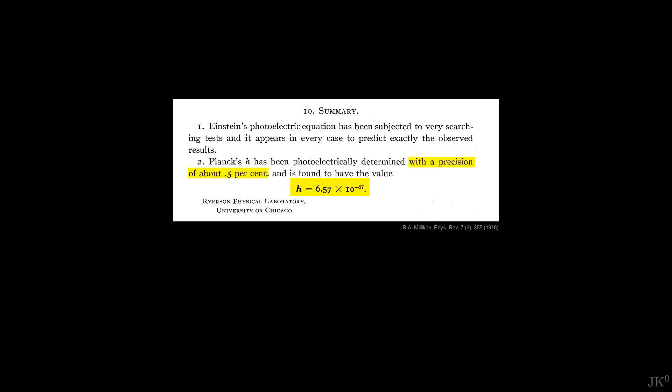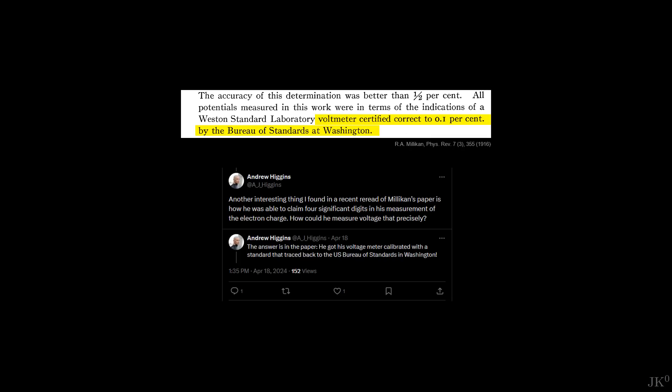Note that he only refers to Einstein's formula, not Einstein's hypothesis. And then he reports on his measured value of Planck's constant with a remarkable precision of half a percent. Just like with his oil drop experiment, Millikan studied and eliminated many sources of error and achieved this insane level of precision because he used a voltmeter calibrated and certified by the Bureau of Standards in Washington. Thanks to Andrew Higgins for pointing this out a few days ago.